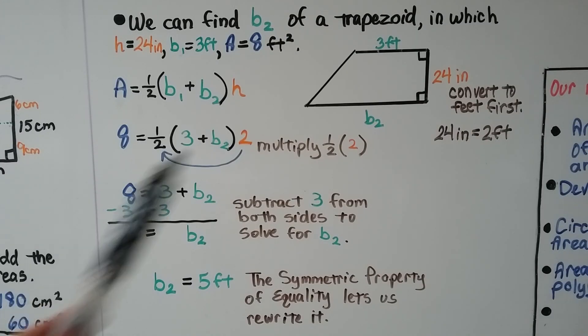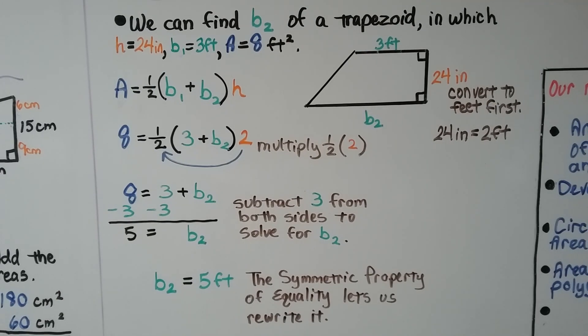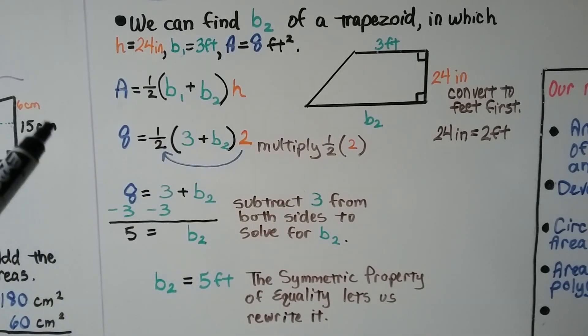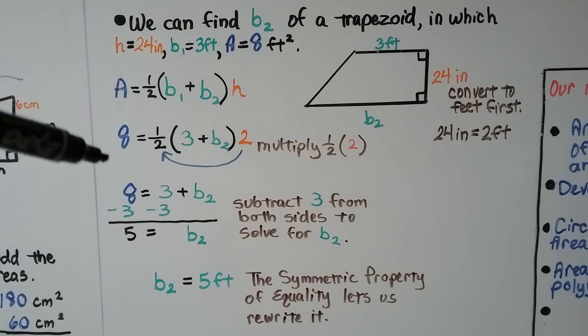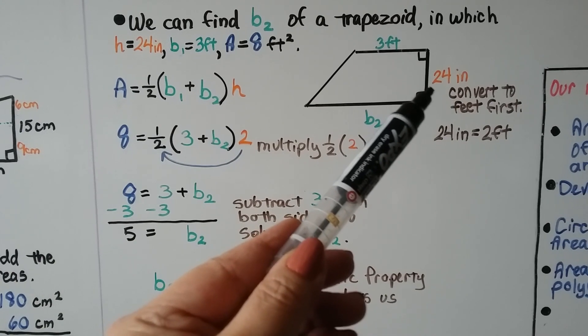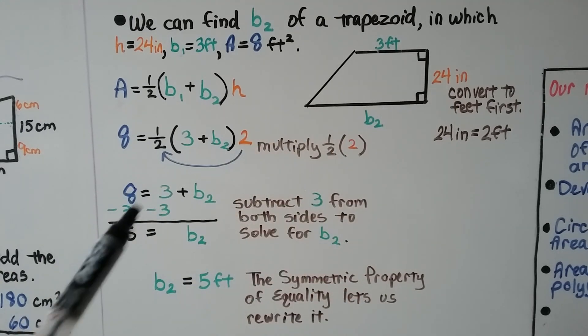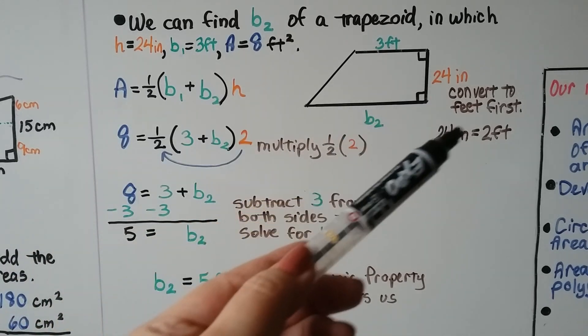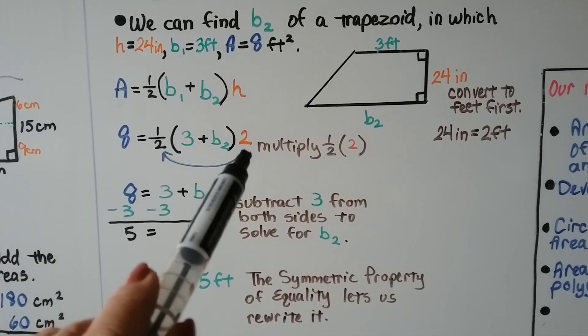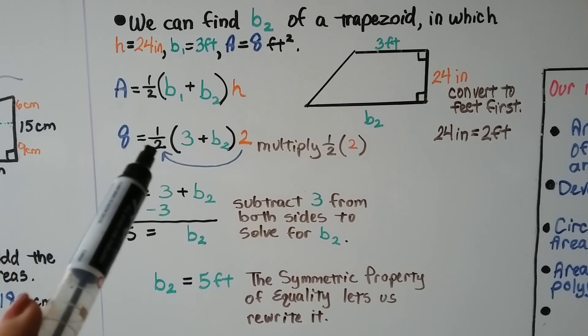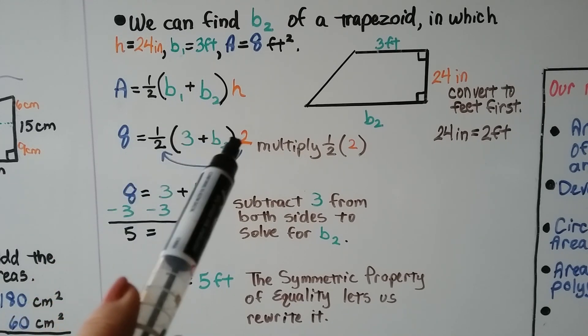We can find b sub 2 of a trapezoid in which the height is 24 inches, base sub 1 is 3 feet, and the area is given as 8 feet squared. So we substitute in our values. A is going to be an 8. And we've got a 24 inches that we need to convert it to feet so that they're all the same. This is in feet, that's in feet. That easily converts to 2 feet. So we're going to have a 2 here for our height. We have a 3 for base sub 1. So we have 8 equals half times 3 plus base sub 2 times 2.